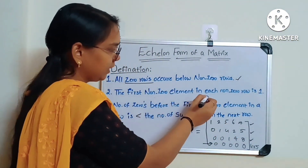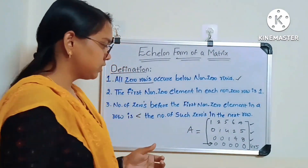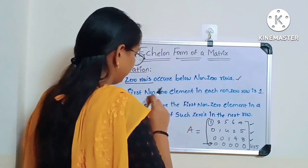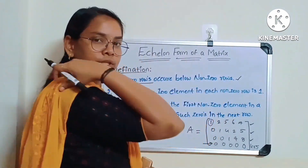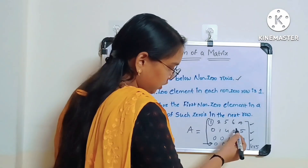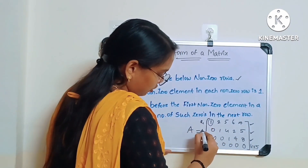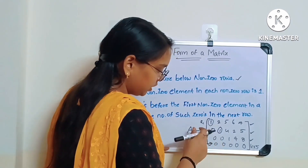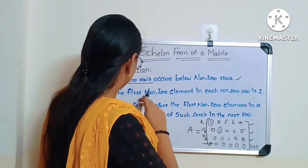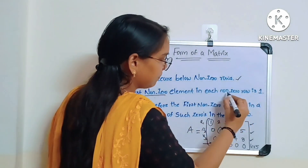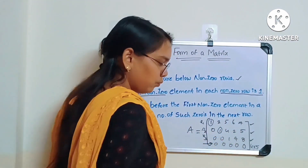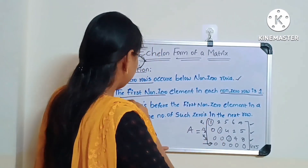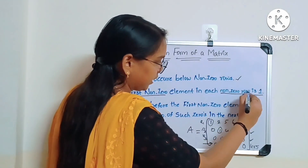The second condition is: the first non-zero element in each non-zero row must be 1. Looking at all three non-zero rows — R1, R2, and R3 — the first entry of each row, other than zero, should be 1. Here, row 1 starts with 1, and row 3 also starts with 1, so the second condition is also satisfied.